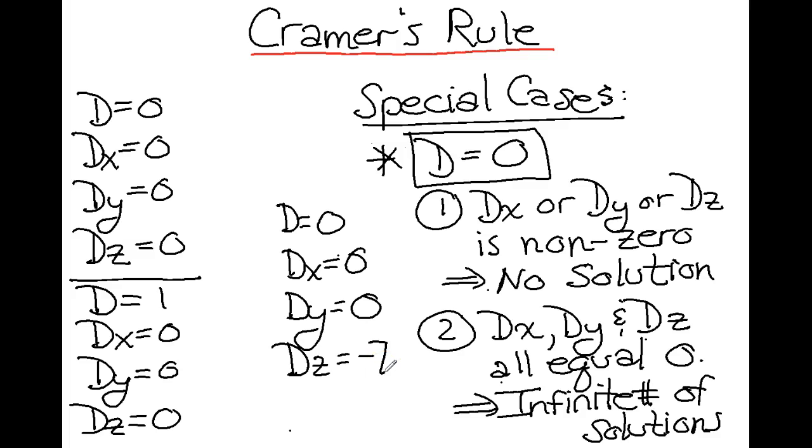Now let's determine what kind of case we have. Well, in this first case, we have d equals zero. Because d equals zero, we have one of our special cases, and now we just need to determine if it's a no-solution case or an infinite number of solutions case. So for a no-solution case, dx or dy or dz is non-zero. One of them has to not be zero.